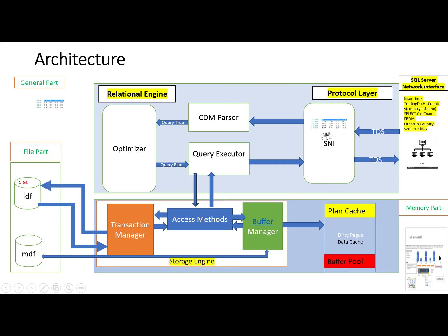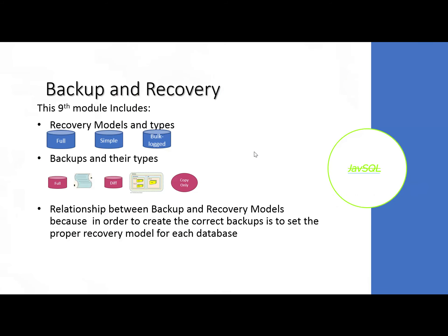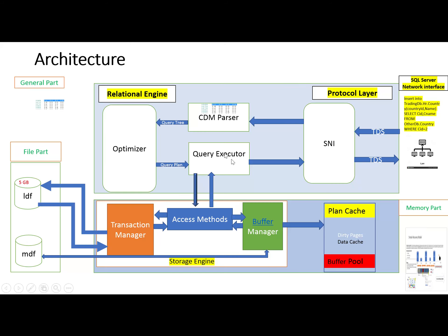This request goes to the protocol layer through the TDS packet, which then sends it to the CMD parser. The CMD parser checks the semantic syntax of the request and builds the query tree. It then sends this to the optimizer, which optimizes the query plan, and then sends it to the query executor.